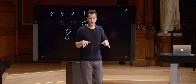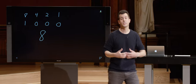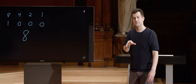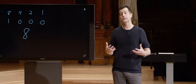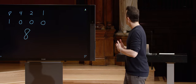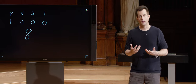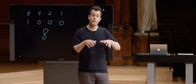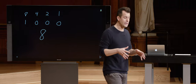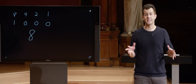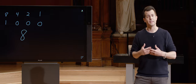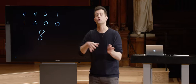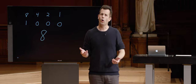Even though computers only speak 0s and 1s and only understand the so-called binary system, they can still count as high as we humans can, and they fundamentally do it in the same way. It's just that they have a smaller vocabulary. But why do they have a smaller vocabulary, especially when they can do so much?